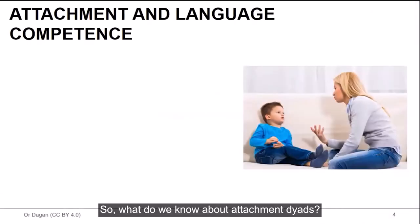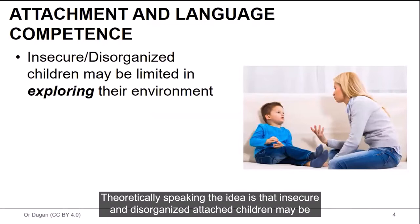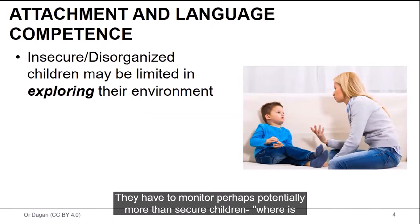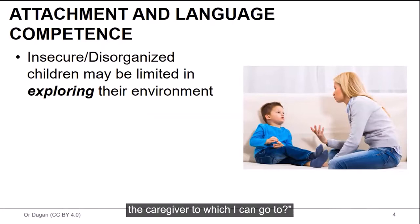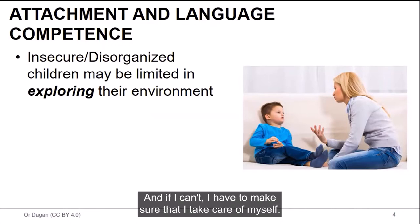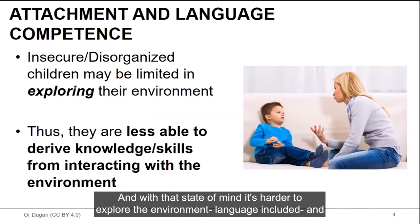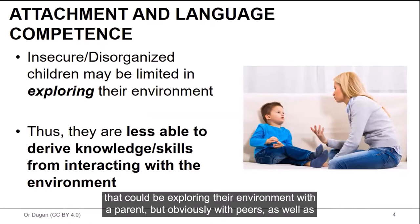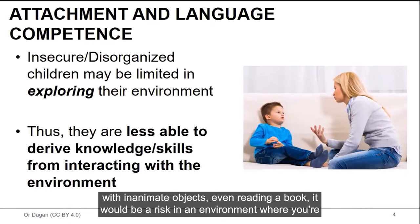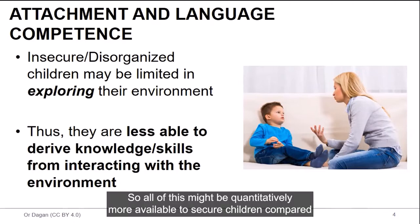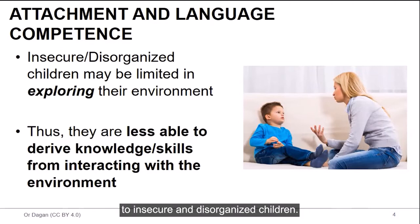So what do we know about attachment dyads? Theoretically speaking, the idea is that insecure and disorganized attached children may be limited in exploring their environment simply because they are existentially distressed. They have to monitor potentially more than secure children. Where is the caregiver to which I can go to? And if I can't, I have to make sure that I take care of myself. This is very distressful. And with that state of mind, it's harder to explore the environment, language included. And that could be exploring their environment with the parent, but obviously with peers as well as with inanimate objects. Even reading a book can be a risk in an environment where you're not sure you can go to someone at times of need. So all of this might be quantitatively more available to secure children compared to insecure and disorganized children.